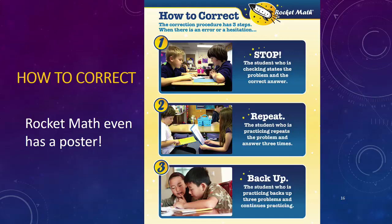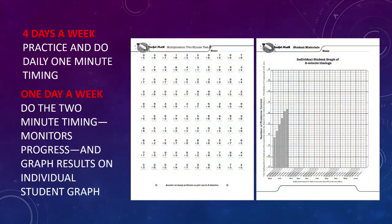It is so important, RocketMath even has a corrections poster, but you're still going to have to teach it yourself. Four days a week, the students follow the daily practice routine and do the daily one minute timing. One day a week, the class should do the two minute timing. This monitors progress and the students are expected to graph their weekly results on the individual student graph inside their folder.